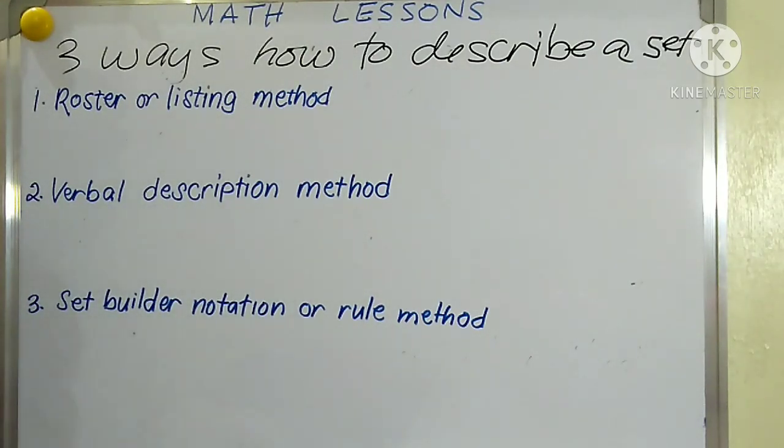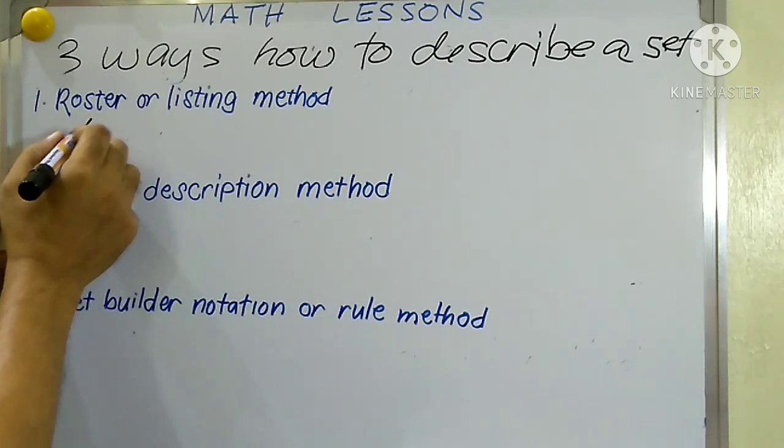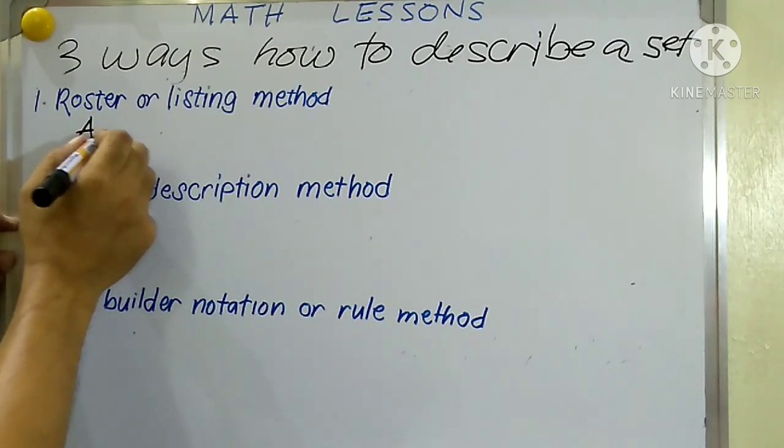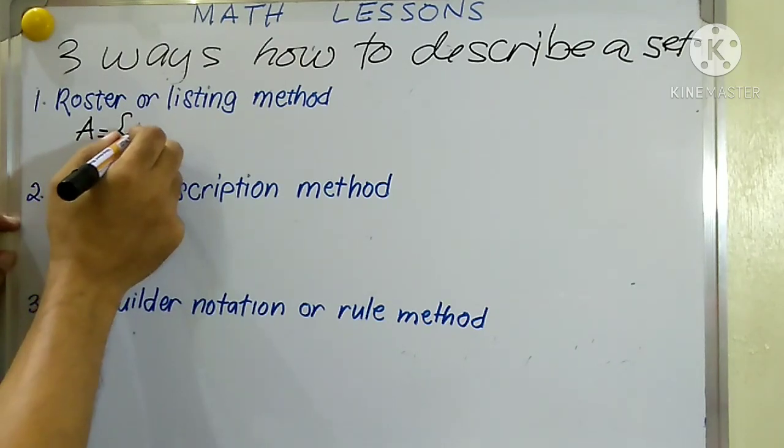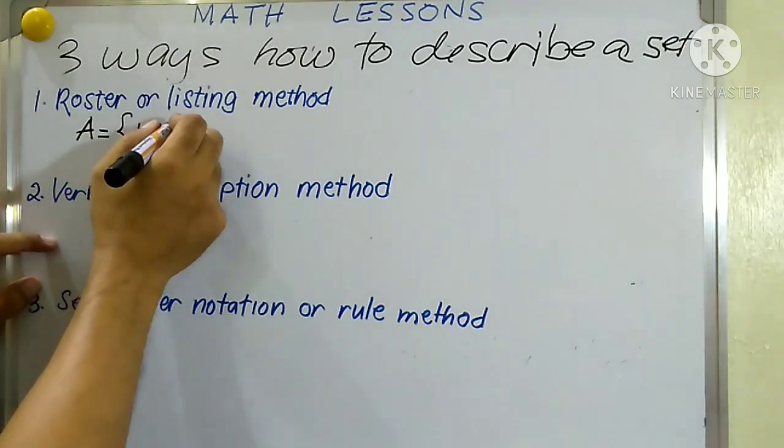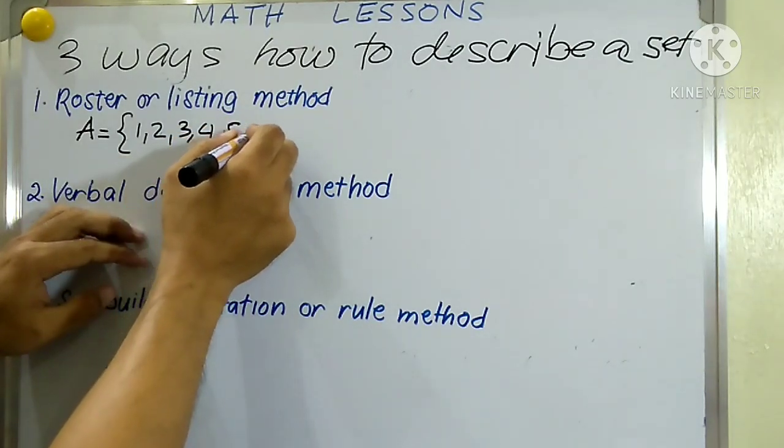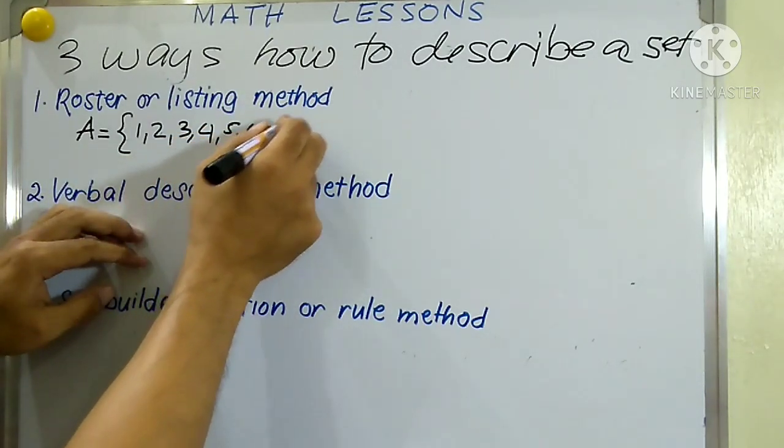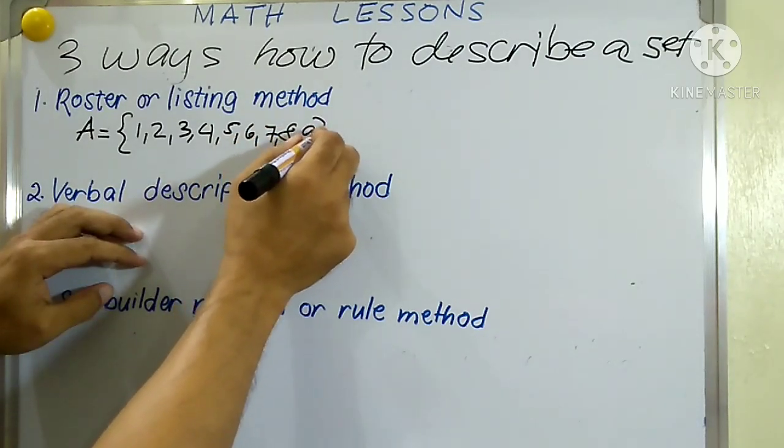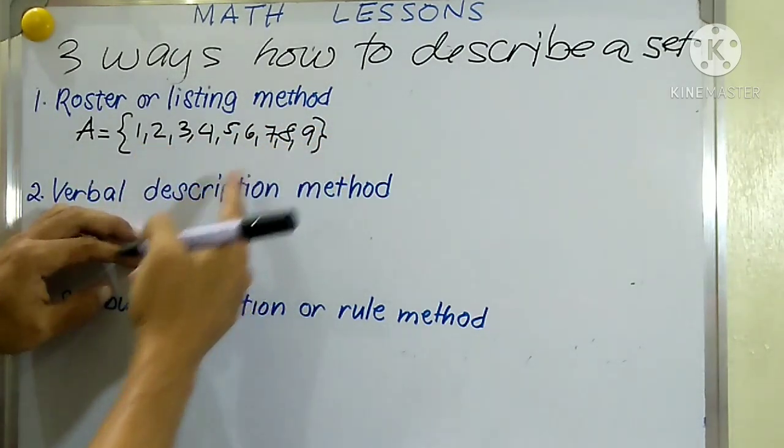And now let us discuss three ways how to describe a set. The first one is by roster or listing method. For example, set A is a set whose elements are 1, 2, 3, 4, 5, 6, 7, 8, and 9. So there are nine elements in that set. You are just listing all the elements.